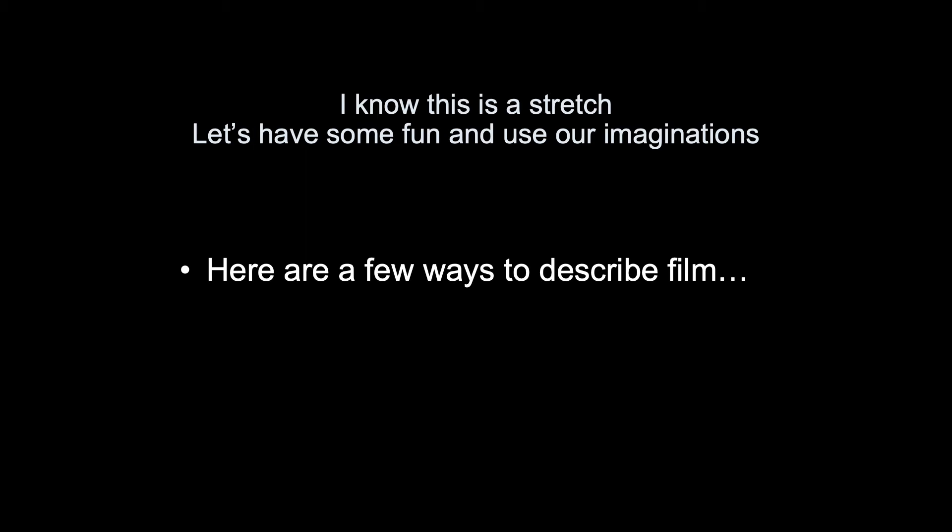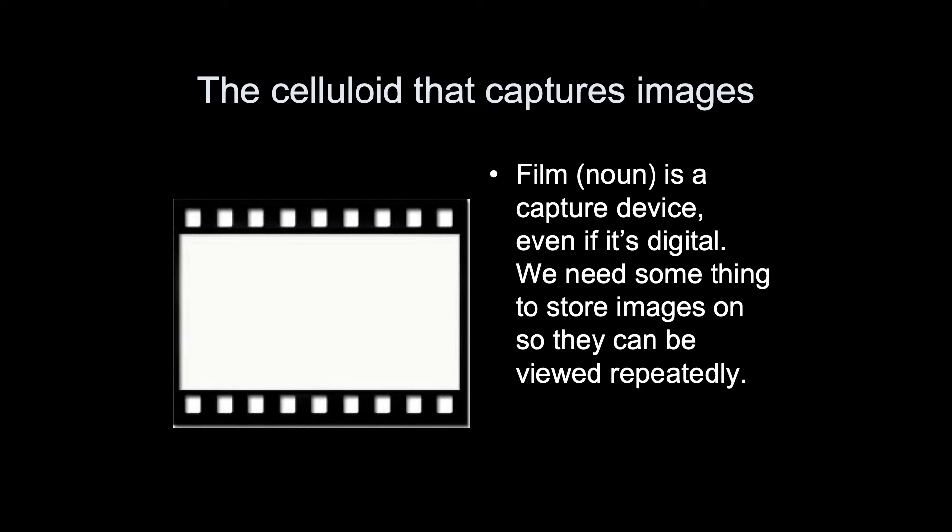Here are a few ways to describe film. First, the celluloid that captures the images — film is a noun, a capture device, even if it's digital. We need something to store images on so they can be viewed repeatedly.